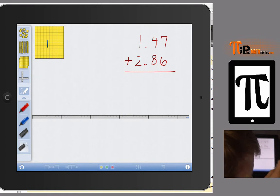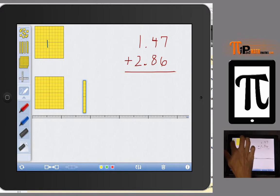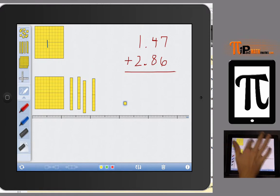What we are going to do here is model decimals and the addition of those decimals. So the first decimal I'm going to model is 1 and 47 hundredths. That is 4 tenths and then 7 hundredths.